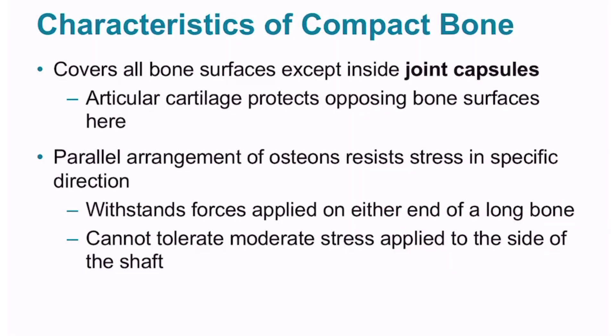A layer of compact bone covers bone surfaces everywhere except inside joint capsules, where articular cartilage protects opposing surfaces. Compact bone is usually found where stresses come from a limited range of directions. The limb bones, for example, are built to withstand forces applied at either end. Because osteons are parallel to the long axis of the shaft, a limb bone does not bend when a large force is applied to either end. However, a much smaller force applied to the side of the shaft can break the bone — compact bone cannot tolerate even moderate stress applied to the side of the diaphysis.